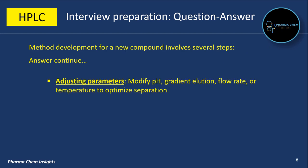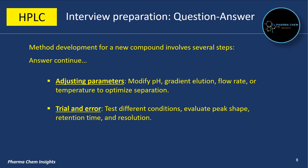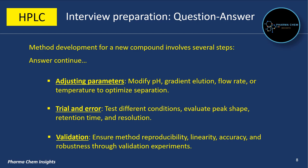Fourth is adjusting parameters — modify pH, gradient elution, flow rate, or temperature to optimize separation. Fifth is trial and error — test different conditions to evaluate peak shape, retention time, and resolution. Sixth is validation — ensure method reproducibility, linearity, accuracy, and robustness through validation experiments.